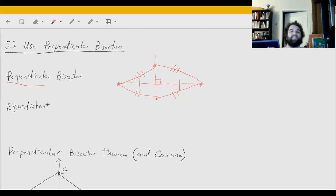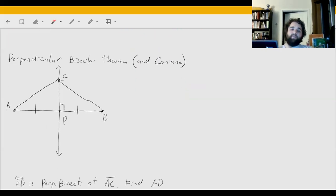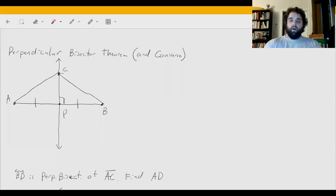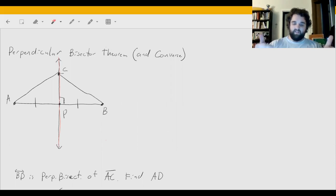As always, never trust the drawings. We're going to work with the perpendicular bisector theorem and its converse. The perpendicular bisector theorem states that any point along a perpendicular bisector is equidistant from both endpoints of the line being bisected.